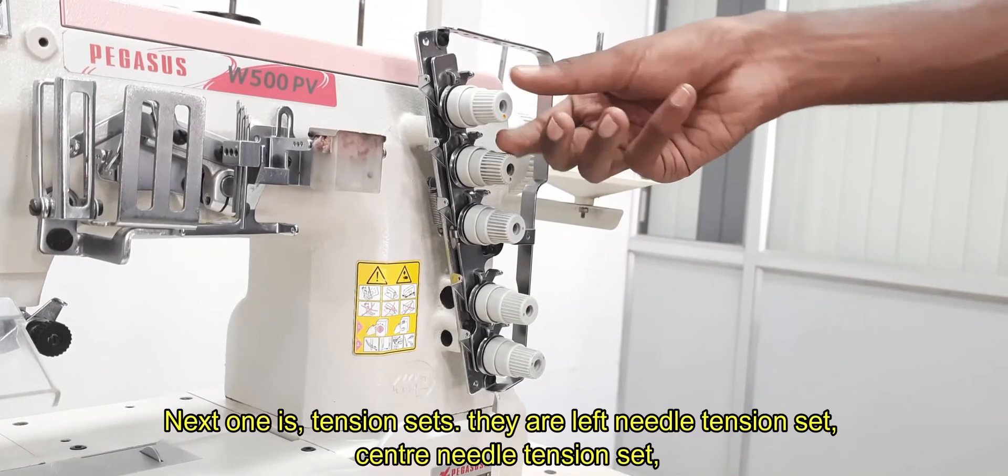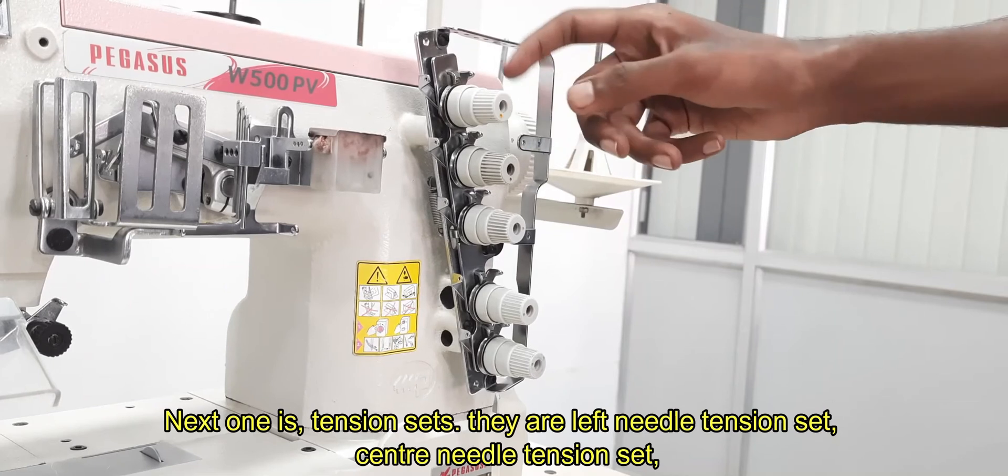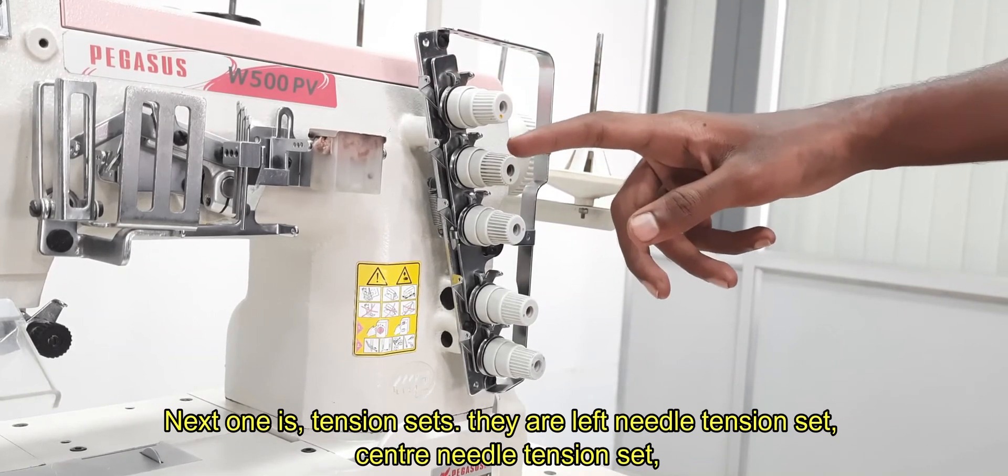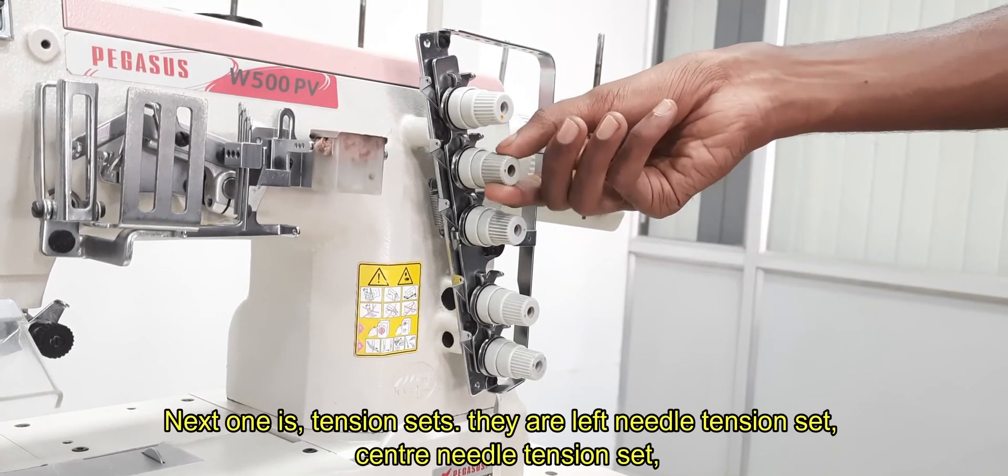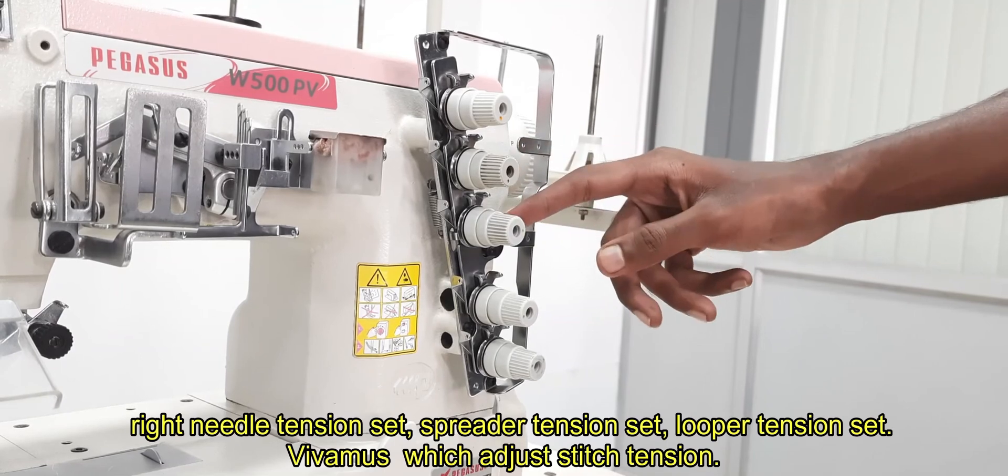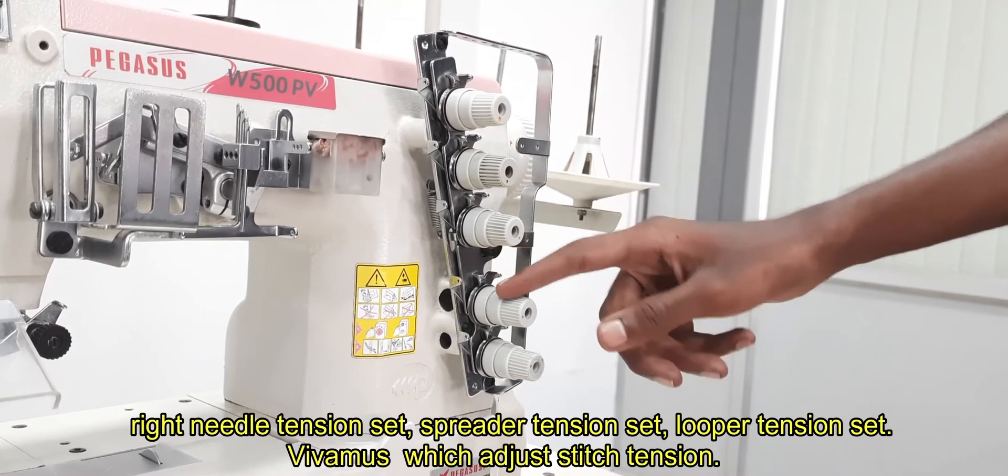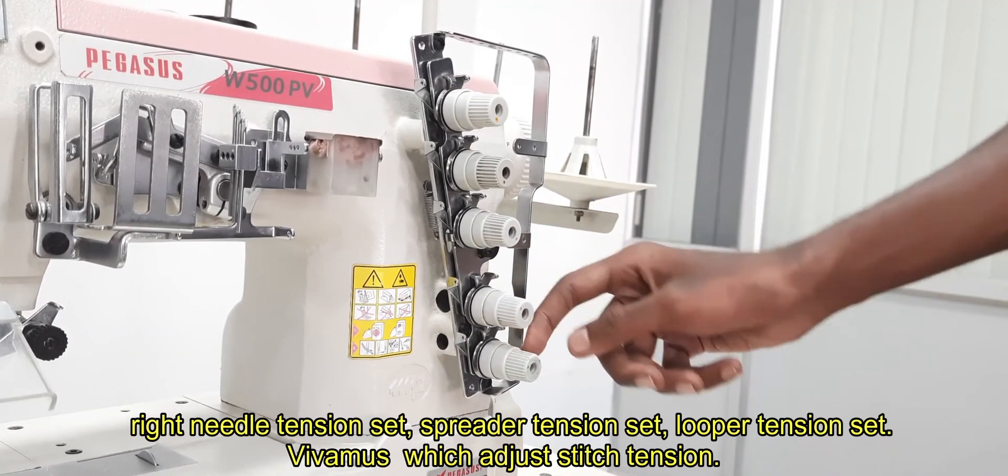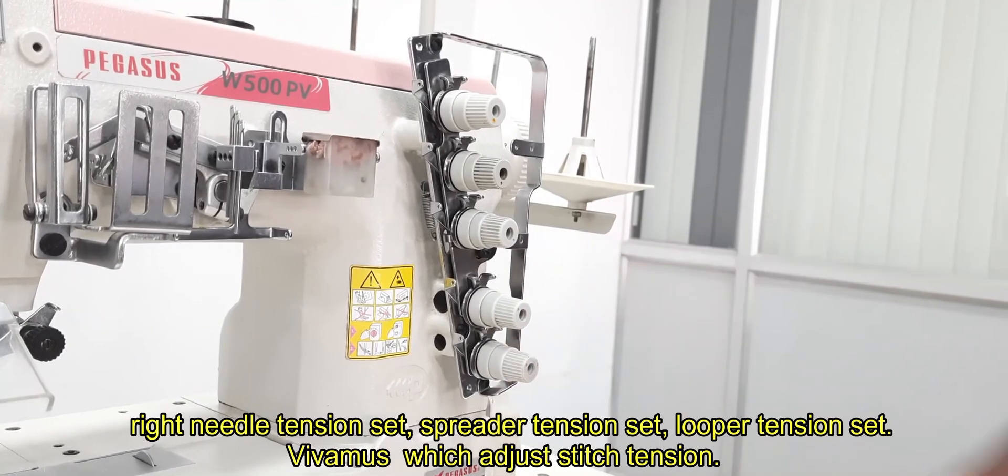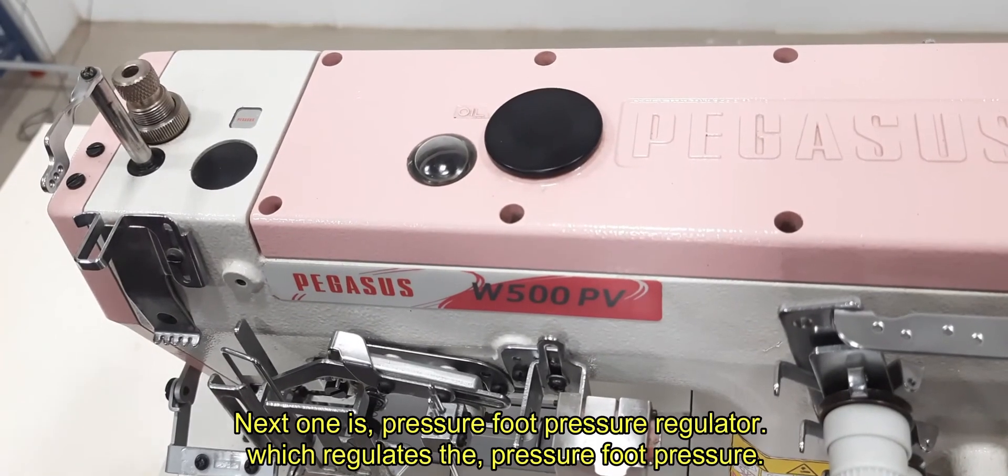Next one is tension sets. They are left needle tension set, center needle tension set, right needle tension set, spreader tension set, looper tension set, which adjust stitch tension.